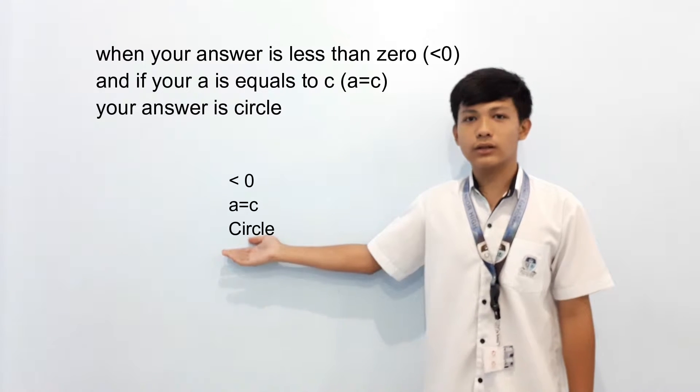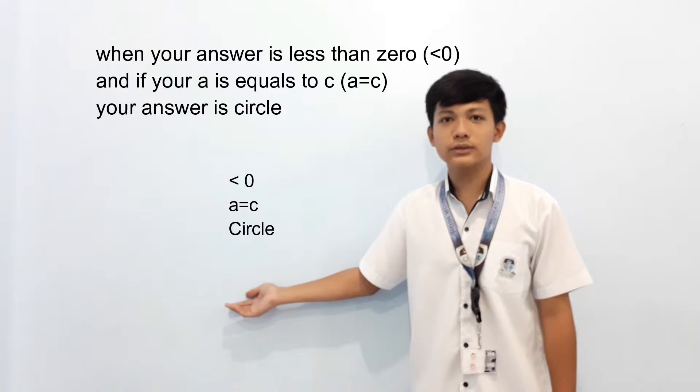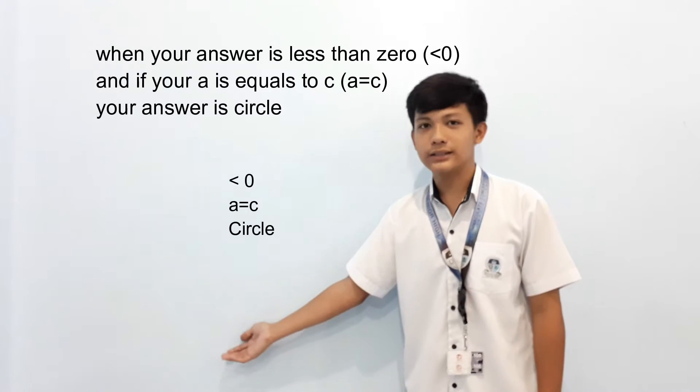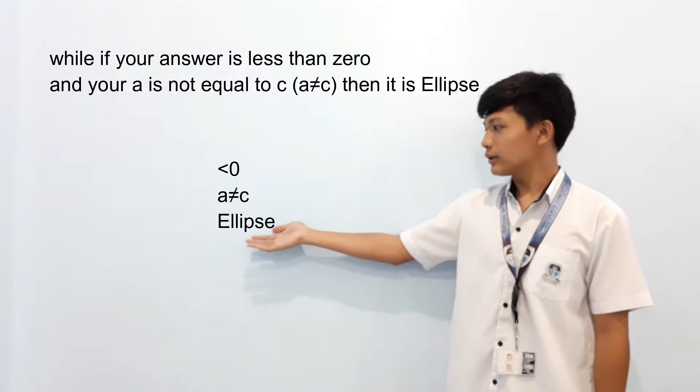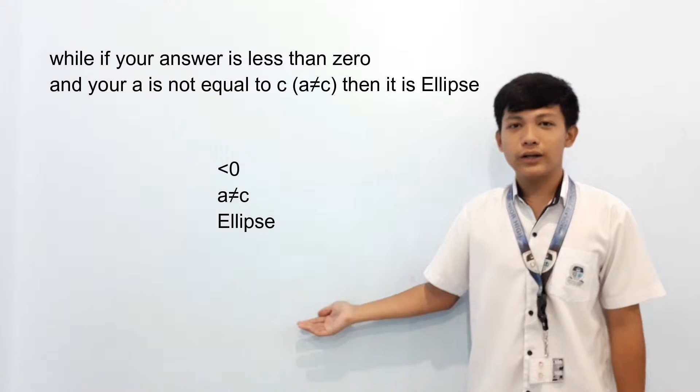When your answer is less than zero, if your A is equal to C, then your answer is circle. While if your answer is less than zero and your A is not equal to C, your answer is ellipse.